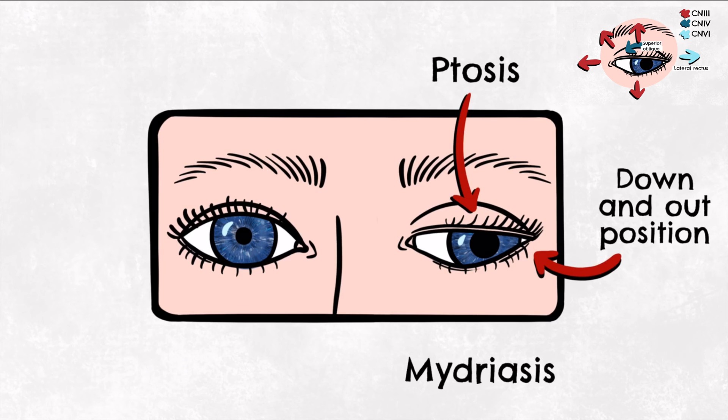signs classically referred to as a third nerve palsy. Swelling of the optic disc known as papilledema may also be found as an additional late stage finding.